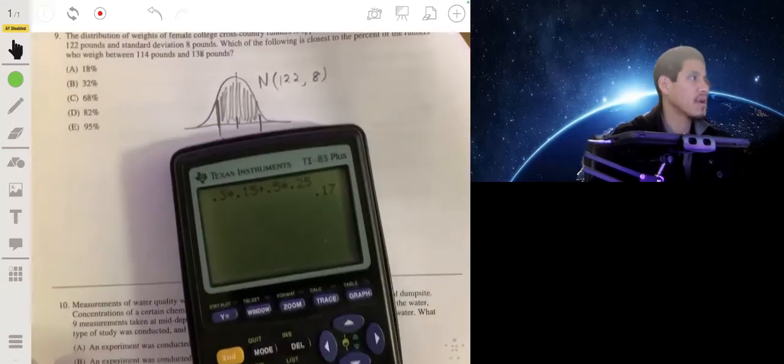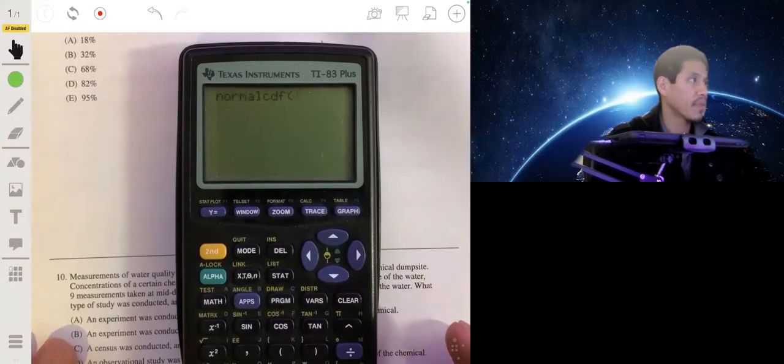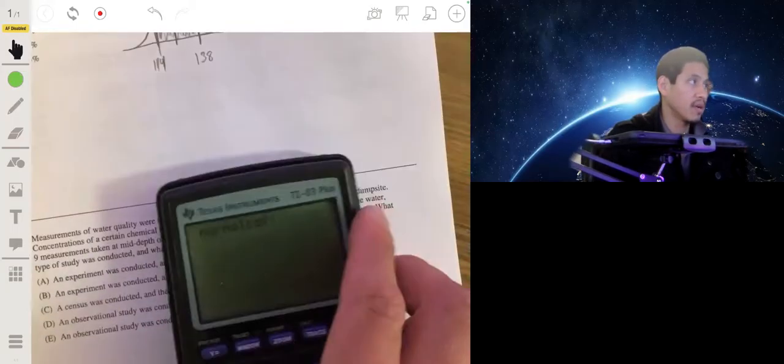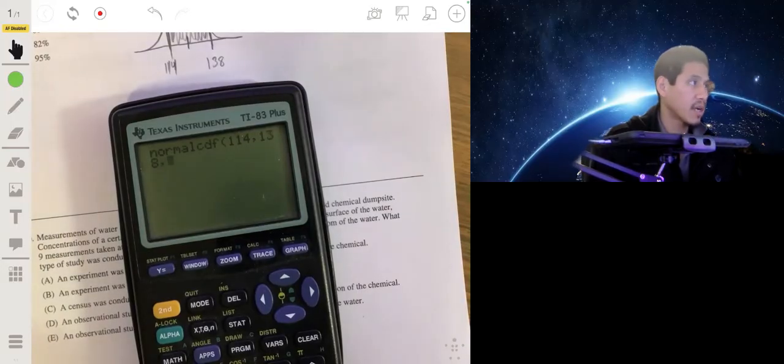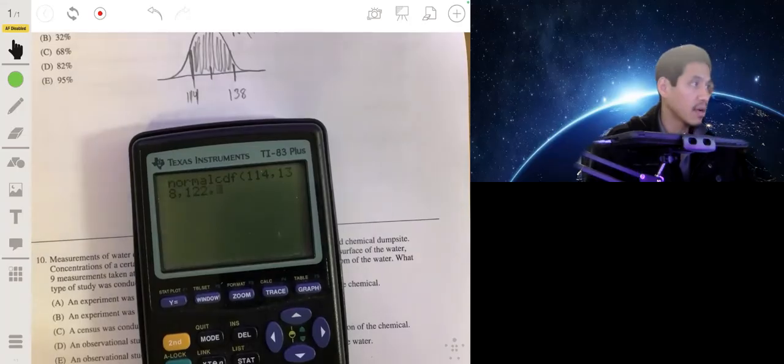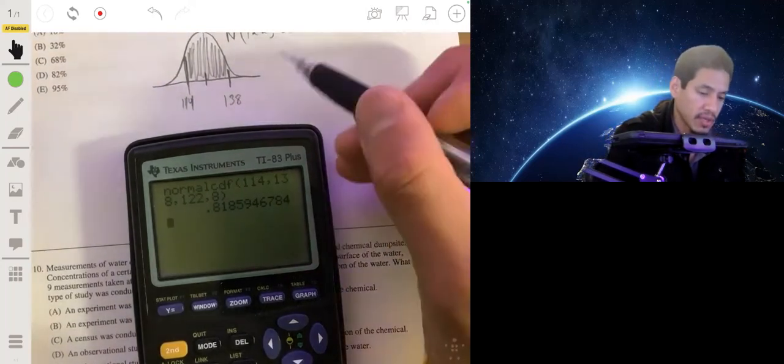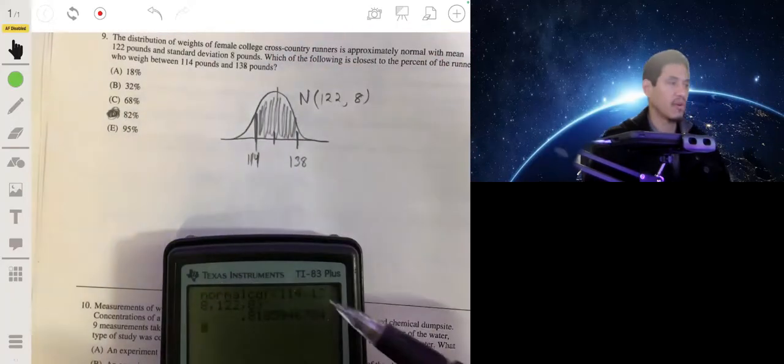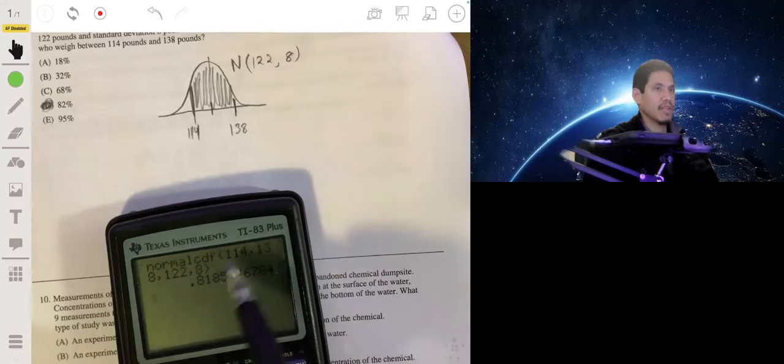For this, you can use your calculator. You can go to the distribution function, go to normalcdf. Now for this calculator, you're going to have to memorize the syntax. It goes lower bound, which is going to be our 114, comma, upper bound, which will be 138, comma, the mean, 122, comma, the standard deviation, which is 8. Now it'll give you that area: about 0.818, so about 82%. If you have a more advanced calculator, it'll probably list lower bound, upper bound, standard deviation, and median. These ones you have to memorize, so just be aware of that.